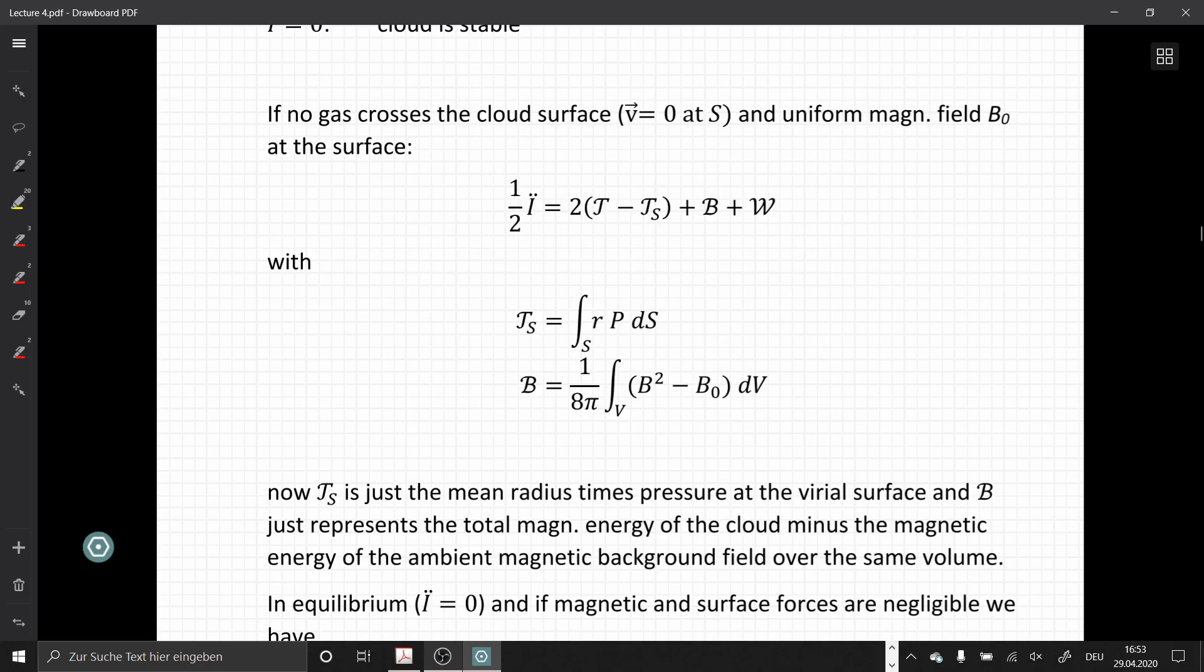If we now assume that we have no gas crossing the cloud surface, therefore there is no exchange of kinetic energy. So we have a velocity of zero at the surface and we have a uniform magnetic field B naught at the surface. The virial theorem simplifies to this equation where the TS simplifies to just the surface integral of R times the pressure and B is here the difference between the uniform magnetic field and the internal magnetic field strength.